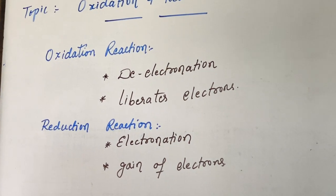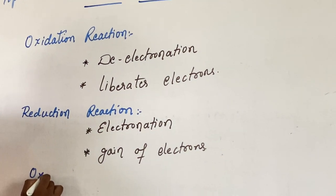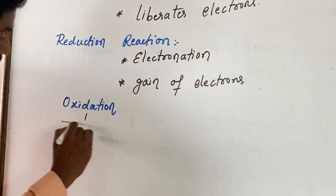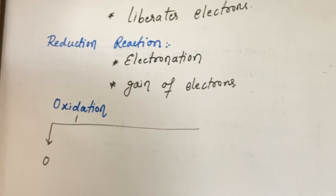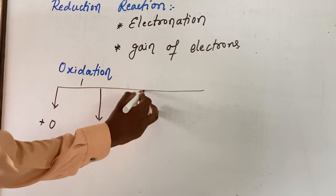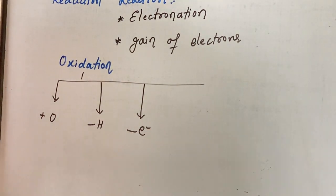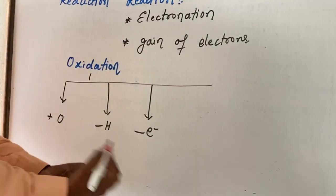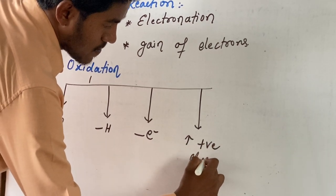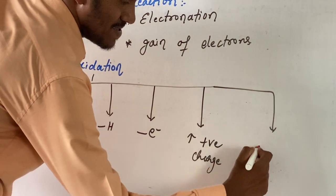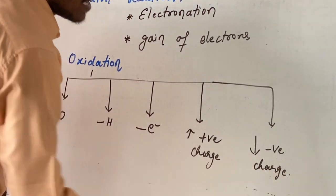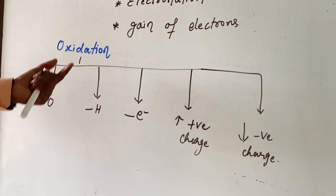Now, what are the various kinds of definitions regarding oxidation and reduction? Oxidation reaction, in terms of oxygen: addition of oxygen, or losing of electrons. With respect to oxidation number, that is increase in oxidation charge, or decrease in oxidation charge. These are the different aspects related to the oxidation reaction.